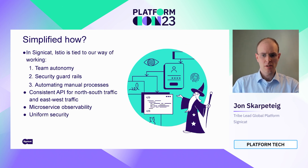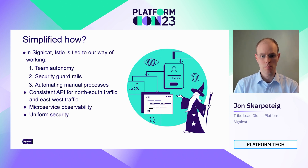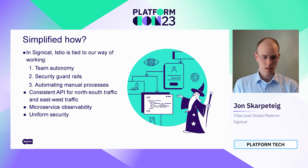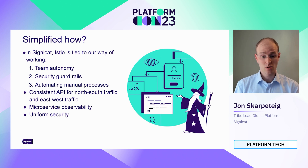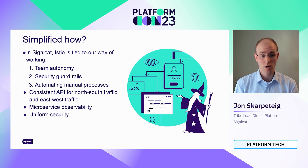So, how does Istio simplify things for SigniCat? Well, it allows us to have team autonomy, to really double down on this platform engineering approach with an internal development platform. It allows us to have security guardrails so that individual teams can deploy with confidence. It allows automation of manual processes for us to successfully scale. It has a consistent API for traffic, both from the outside in but also in between services, and it enables a unified looking glass into how the traffic is running inside of the different products.